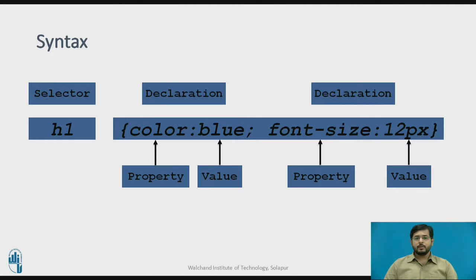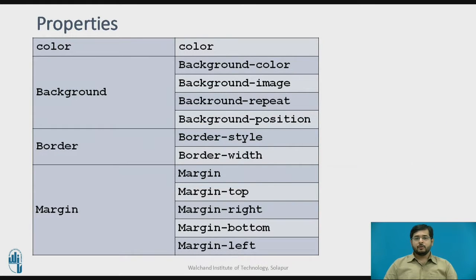The basic syntax of CSS is the element — that is h1 — followed by curly braces, and inside the braces we have property and value differentiated by a colon. Every property and value is ended by a semicolon. These are some properties we can use. For example, color is used to change the font color. For background, we have four properties.